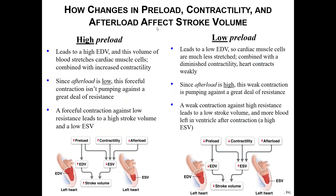Focusing on how changes in preload affect stroke volume: a high preload means filling up that ventricle, leading to a higher end diastolic volume and more blood to pump out. If afterload decreases — if the pressure in the aorta goes down — it's easier to pump blood out, meaning we pump out more; end systolic goes down and stroke volume goes up. If we pump more forcefully, we send out more blood, end systolic goes down, and stroke volume goes up.